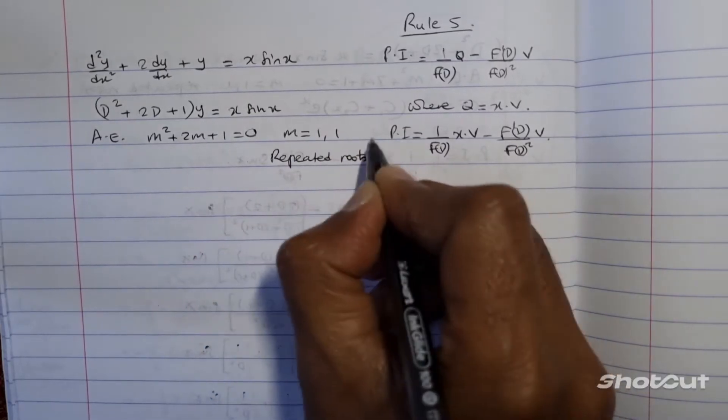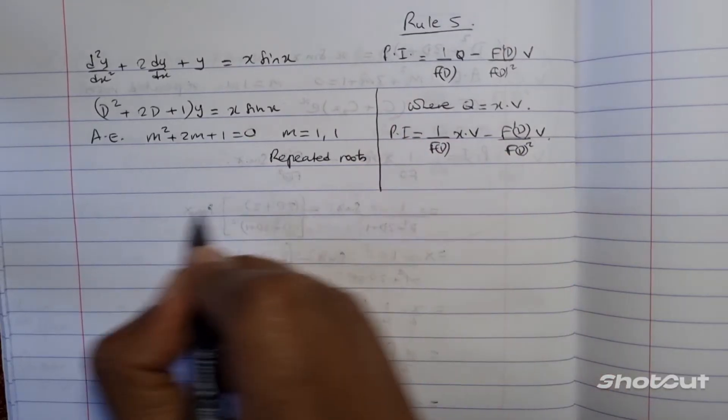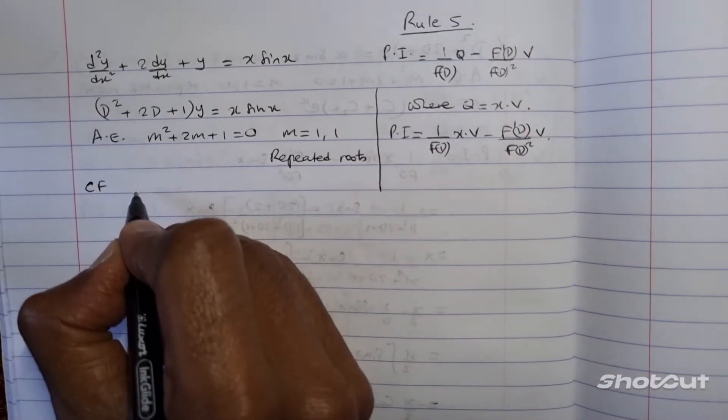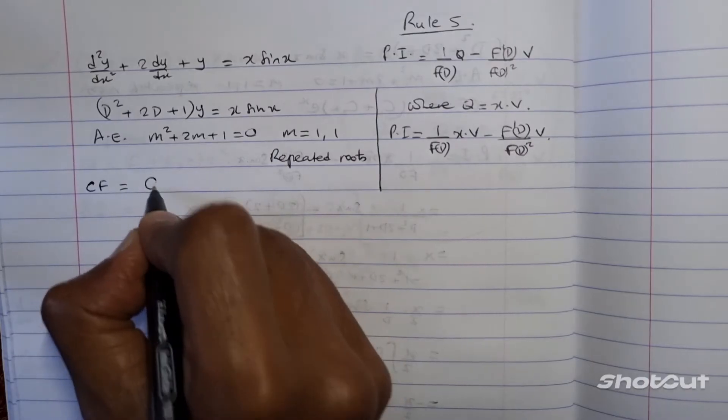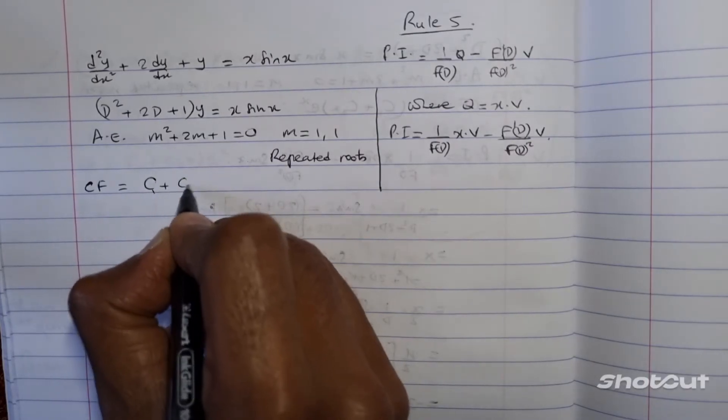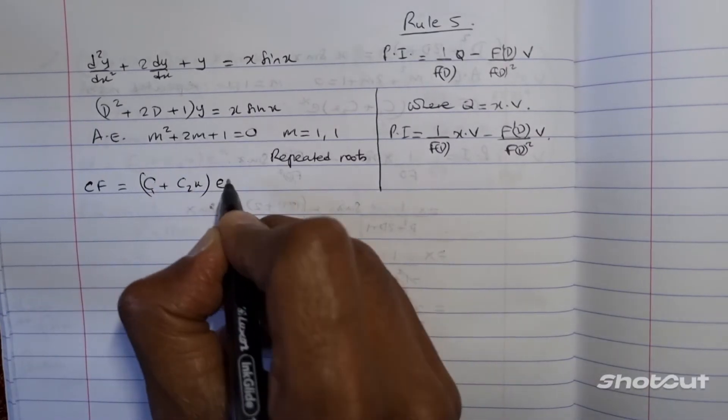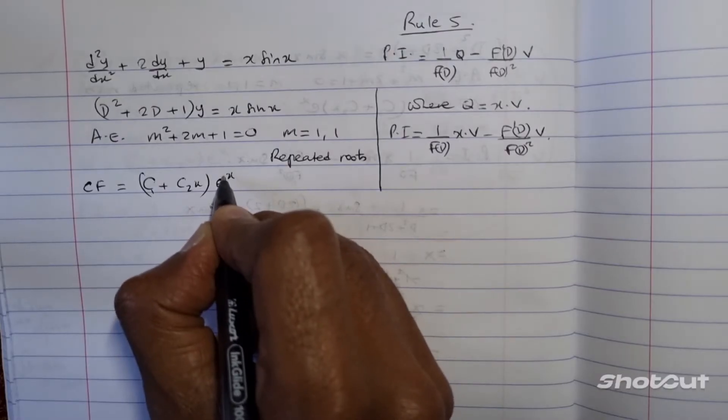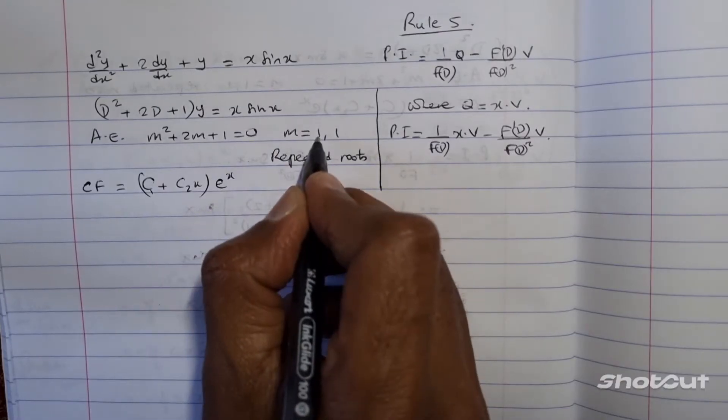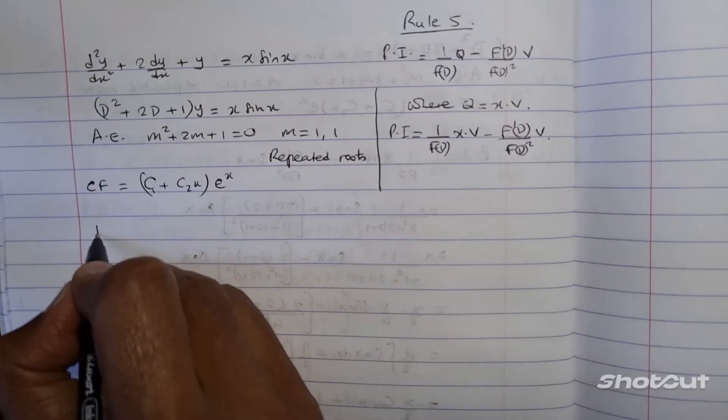And so, for the repeated roots, the complementary function is going to be equal to c1 plus c2x into e to the x, where this is 1x and 1 is basically here, the root. Now, for the particular integral,